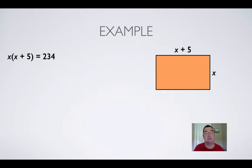x times x plus 5 equals 234. Now notice, we can't use the null factor rule on this. We can't say that x equals 234 or x plus 5 equals 234. That only works if you have a zero on the right hand side. So don't try to do that here.